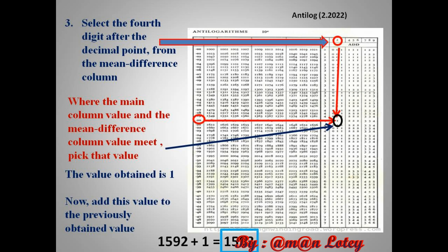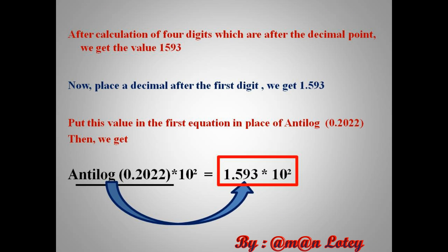The fourth digit after the decimal point is taken from the mean difference column. The point where the main column value and the mean difference column value meet, pick that value. The value obtained is 1. Now add this value to the previously obtained value; we get 1593. After calculations of all four digits after the decimal point, we get 1593. Now place the decimal point after the first digit; we get 1.593. Put this value into the first equation in place of antilog 0.2022; then we get the answer: 1.593 × 10².